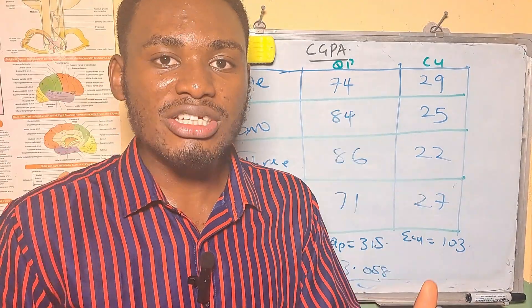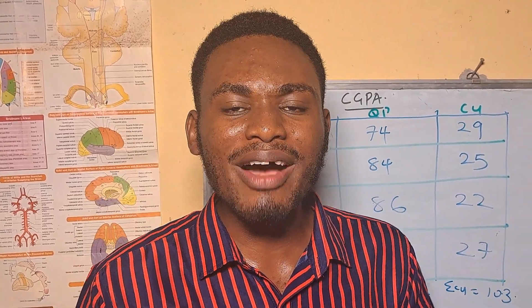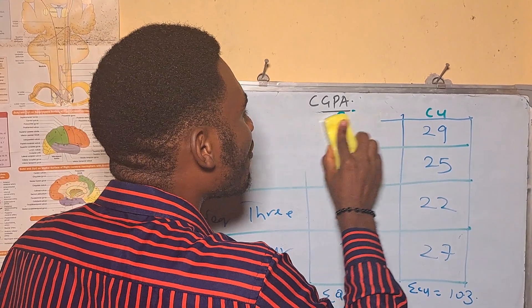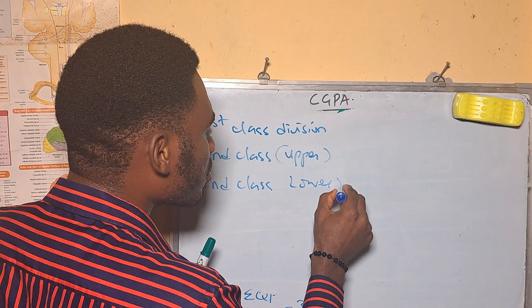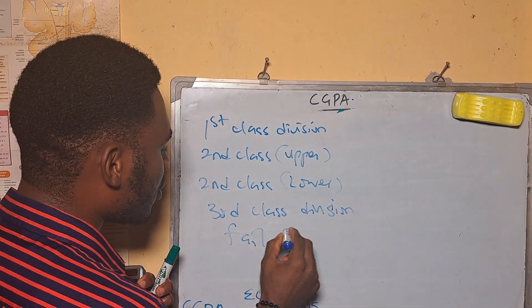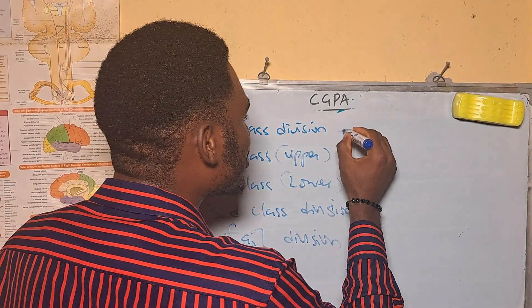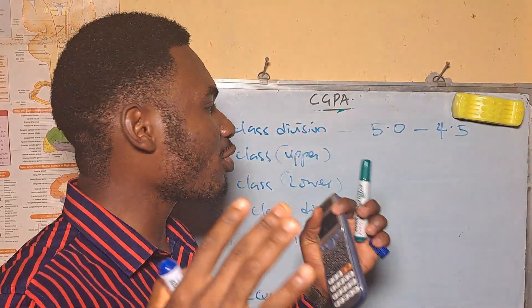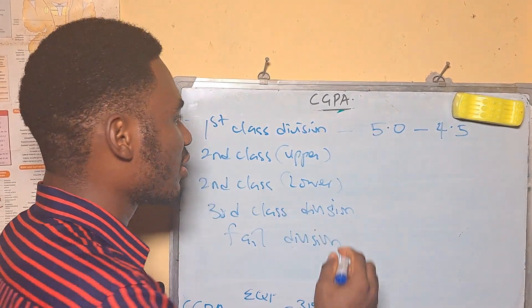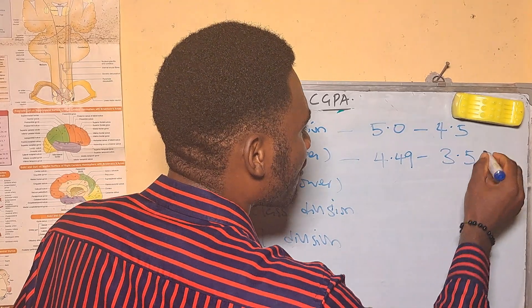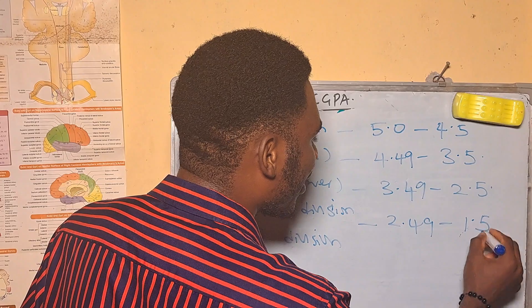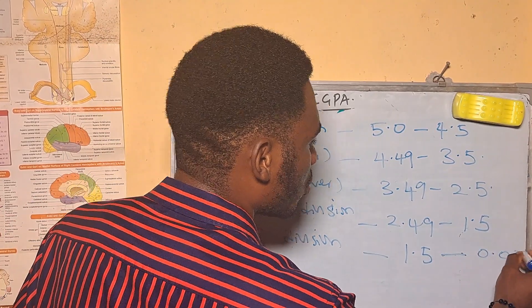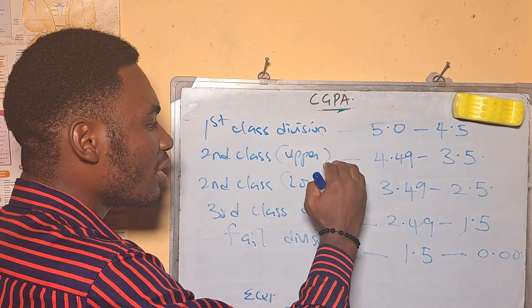In the Nigerian university system there are two basic grading systems: the five-point system and the seven-point system, but the five-point system is the most popular. Under the five-point system, CGPA is categorized into five divisions: First Class (5.0–4.5), Second Class Upper (4.49–3.5), Second Class Lower (3.49–2.5), Third Class (2.49–1.5), and Fail (1.5–0.0). Once you calculate your CGPA, you can determine which division you fall into.